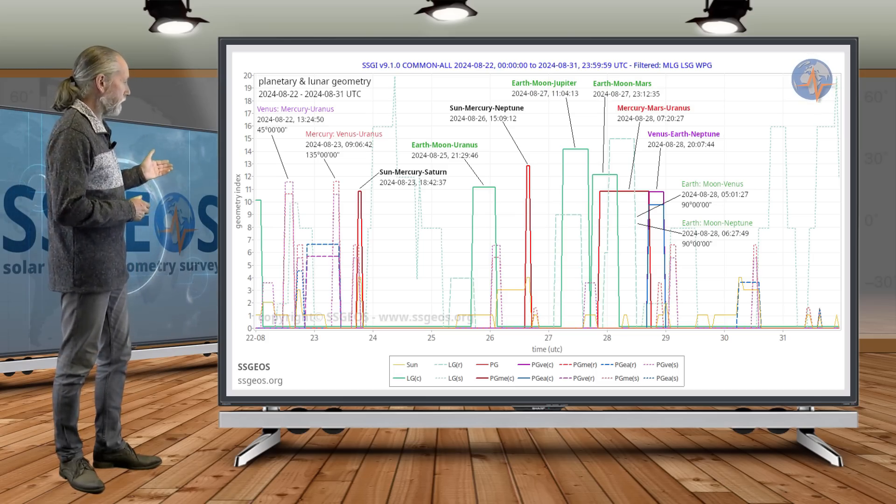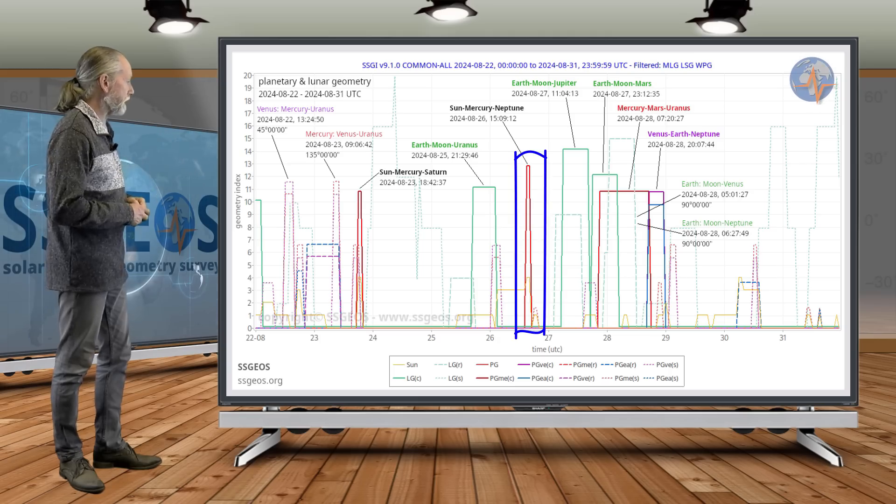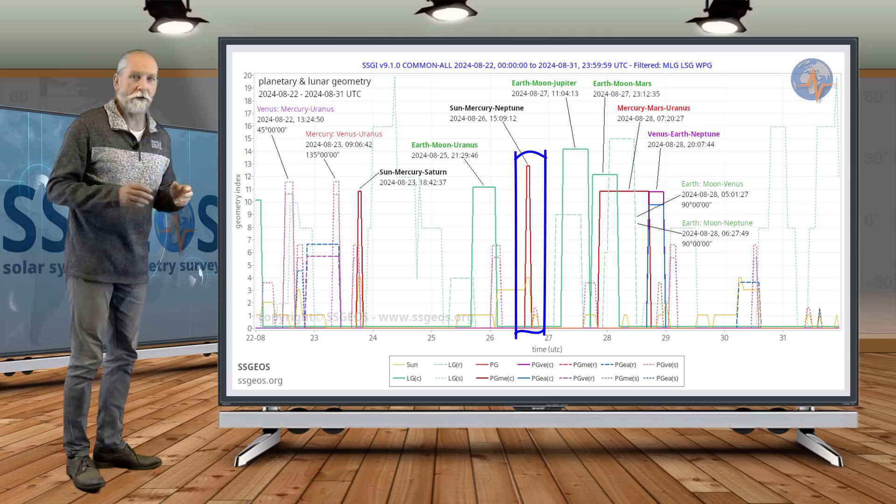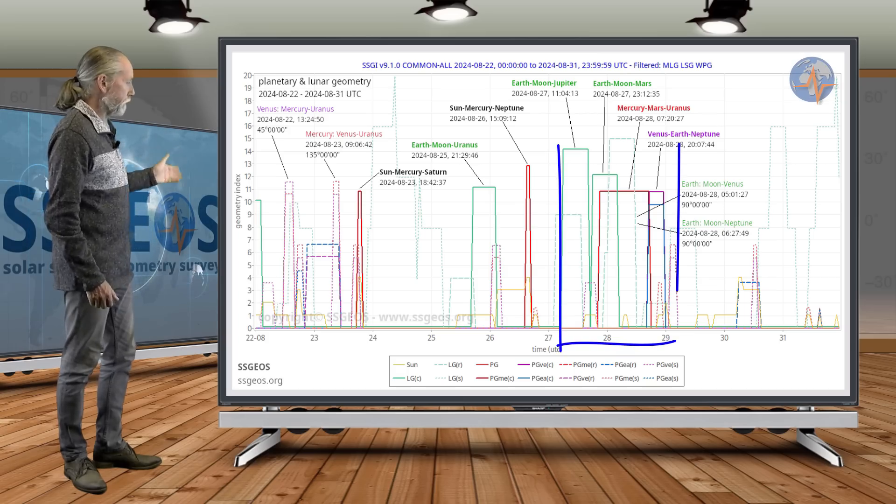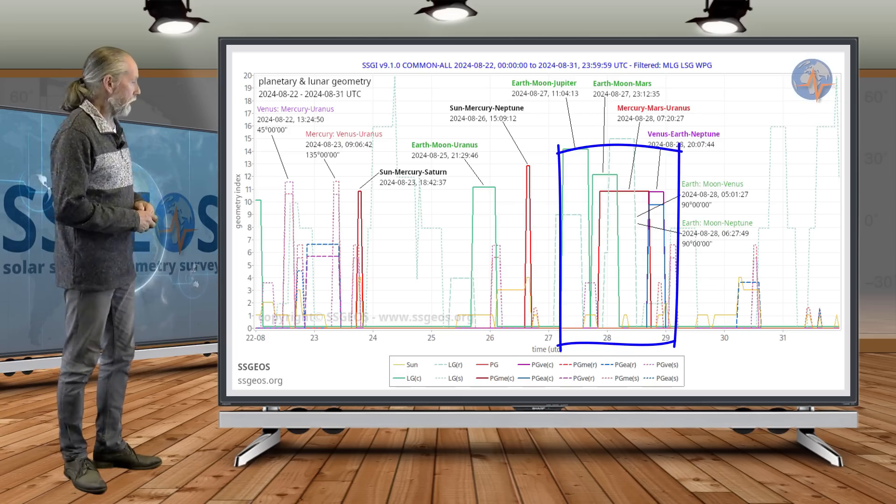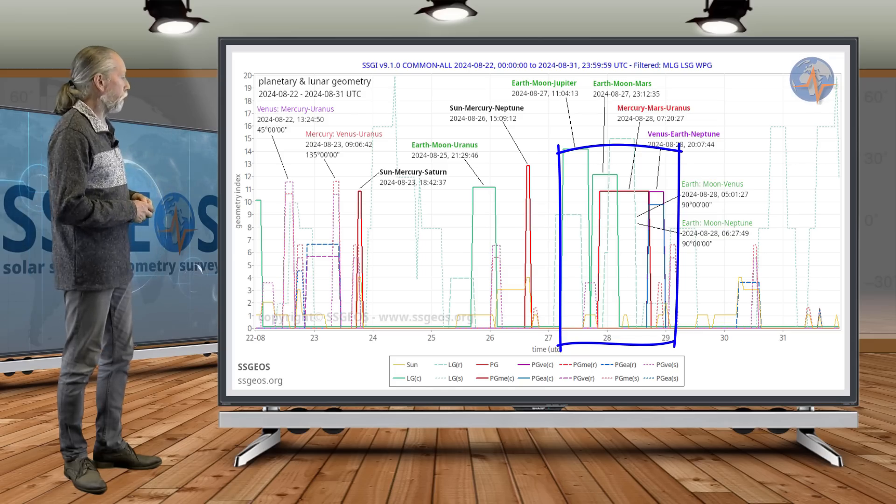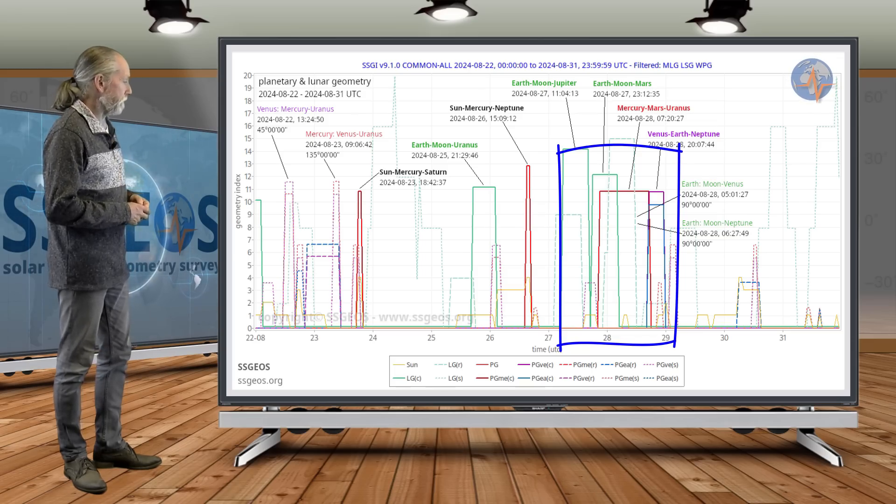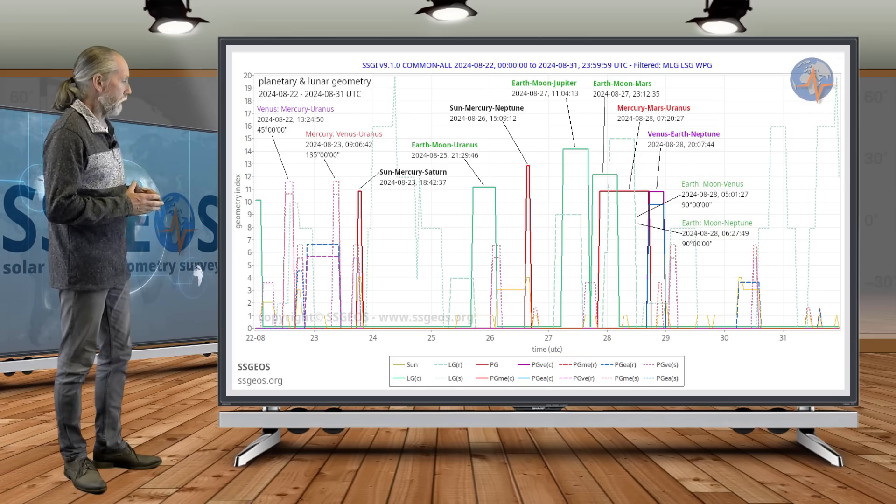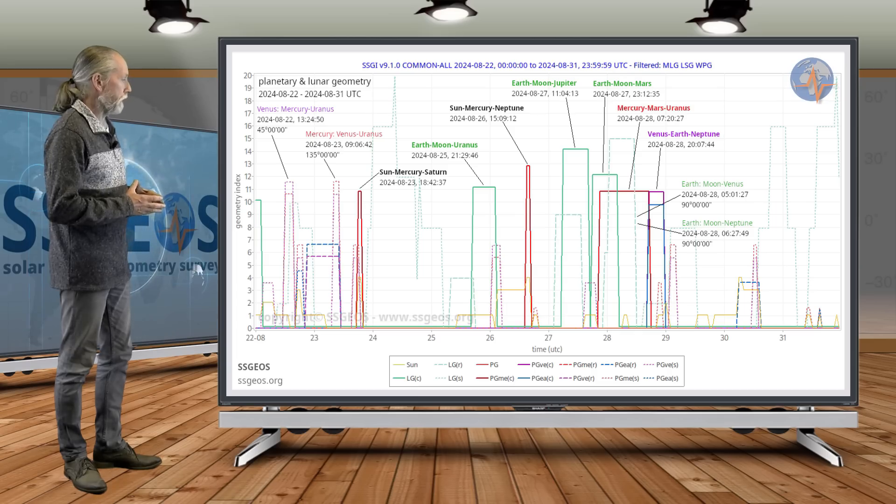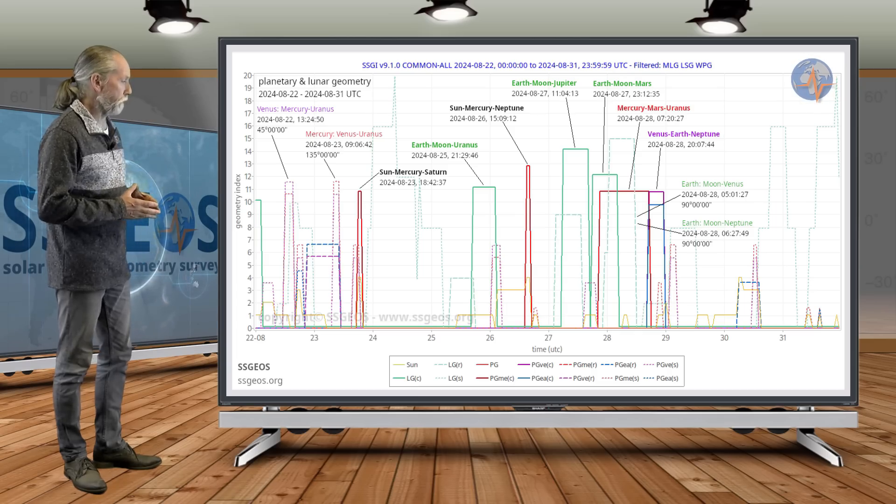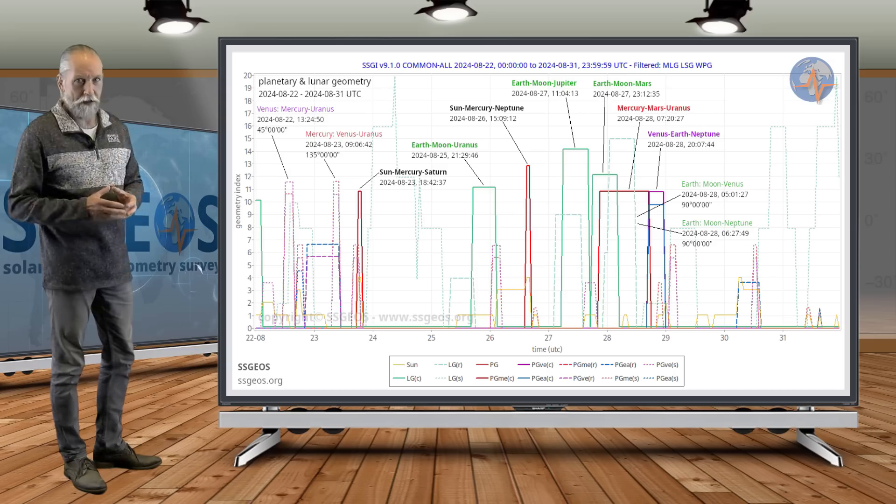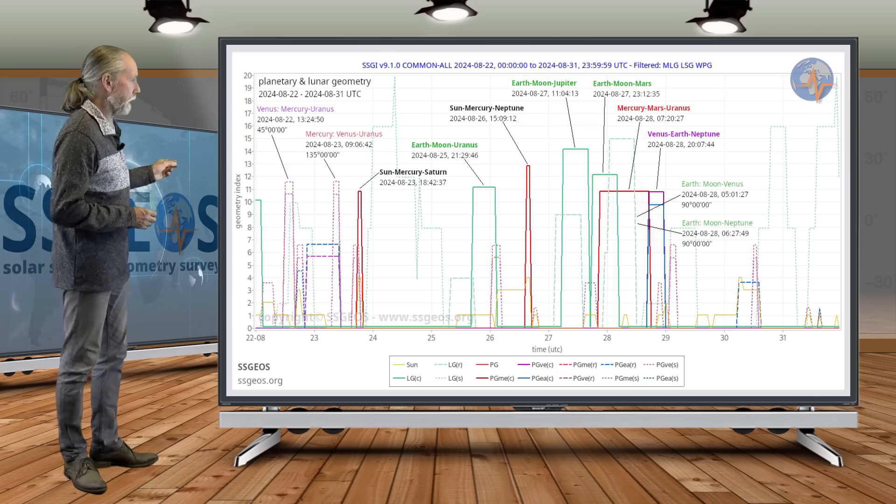Then we have Sun-Mercury-Neptune on the 26th, and then things become a bit more critical as we can see a convergence on the 27th and 28th. Earth-Moon-Jupiter, Earth-Moon-Mars, and that will be followed by some critical geometry with Mercury-Mars-Uranus and Venus-Earth-Neptune. Two planetary conjunctions on the 28th. So let's have a look at the solar system, how that geometry looks like.